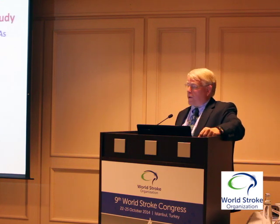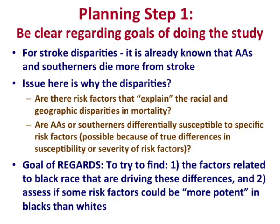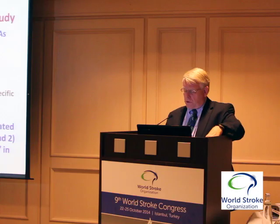For stroke disparities, being clear about the goal means acknowledging it's already known that African Americans and Southerners die more frequently — the question is why. Are there factors that explain this? Are African Americans and Southerners more susceptible to specific risk factors? The goals of the REGARDS study are to investigate both concepts: are there different factors that are more prevalent, and is there differential susceptibility?